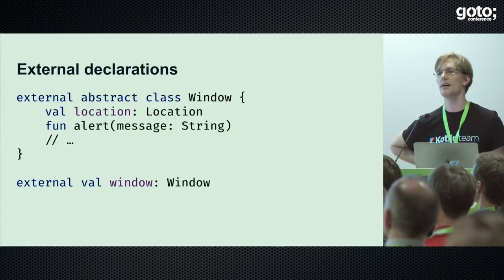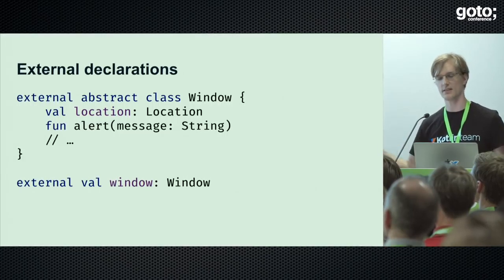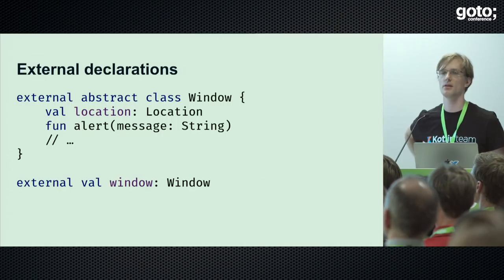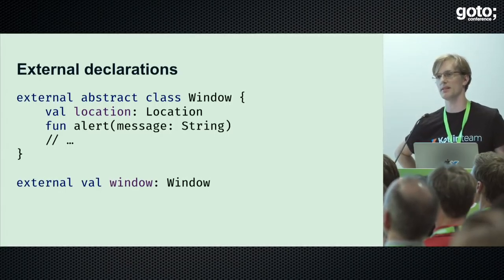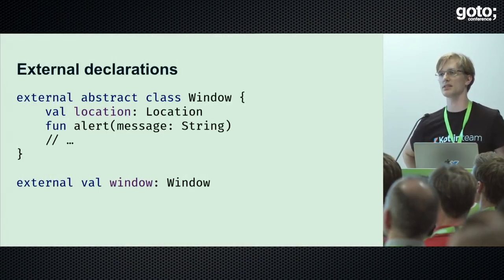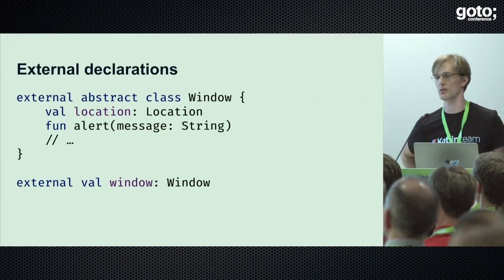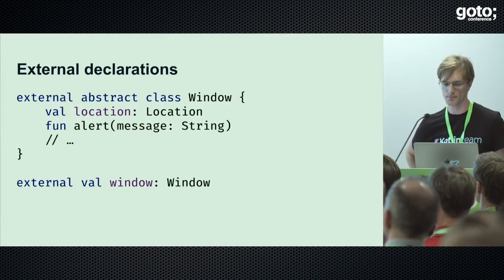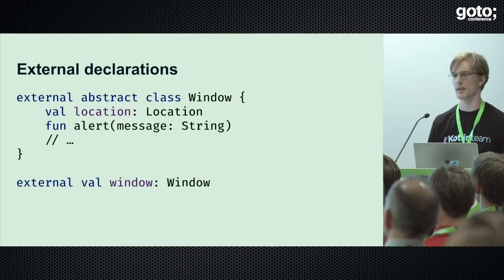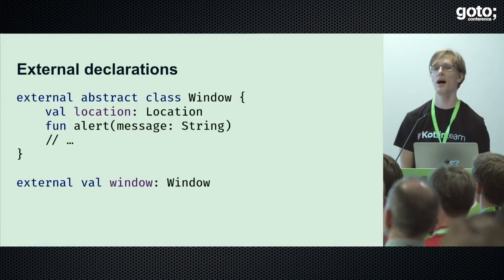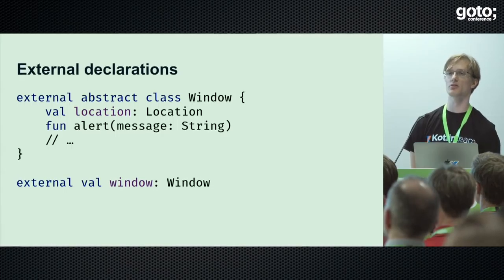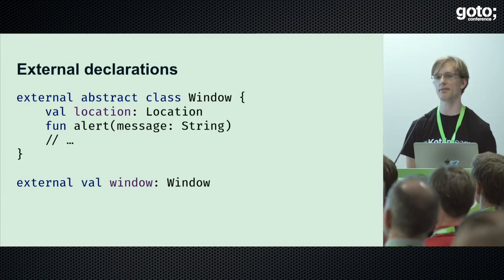What do external declarations look like? If you want to access an external API from Kotlin.js, you write something like this — a definition of a class, like the Window class, that has a location property and an alert method. There are no method bodies; all implementations are provided by the browser. But there are types, which allow you to access those definitions in a type-safe way with full support for code completion, documentation, and type checking.